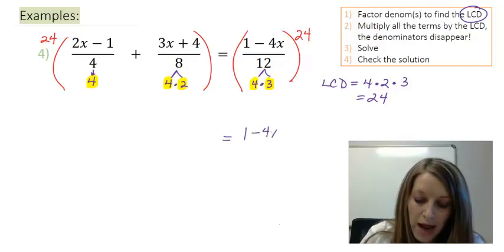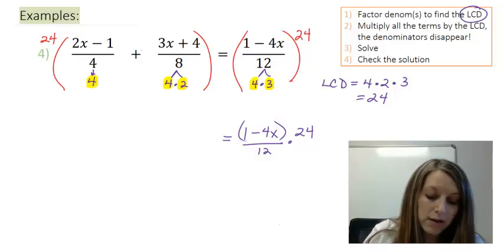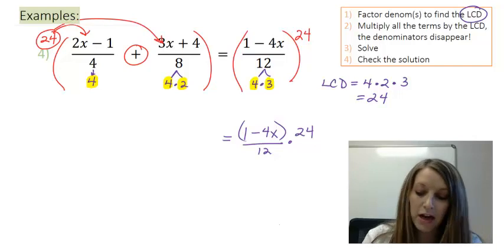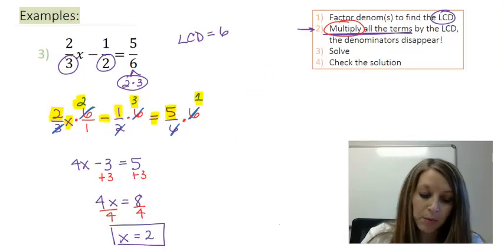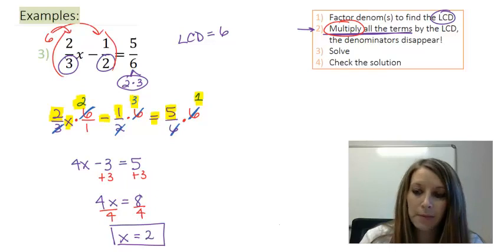1 minus 4x entirely over 12 times 24. My left hand side I can write it out the way I see it. Or since I know that there is an addition involved that means I need to distribute this 24 to both fractions. And that's actually what we did in this example here. I distributed my 6 to both fractions. I just didn't write out that step.